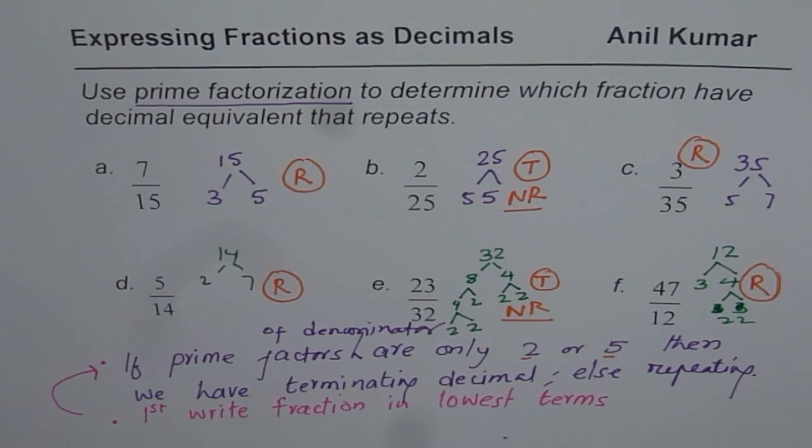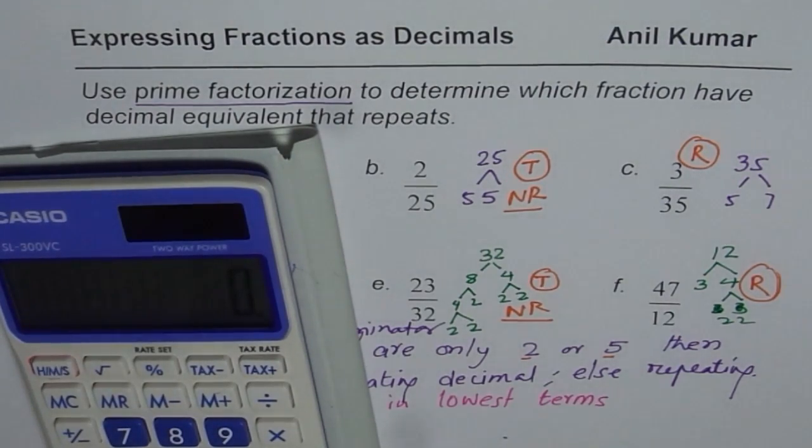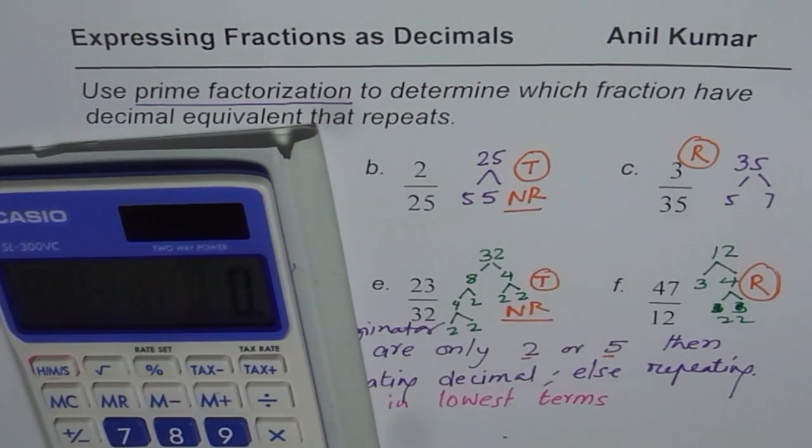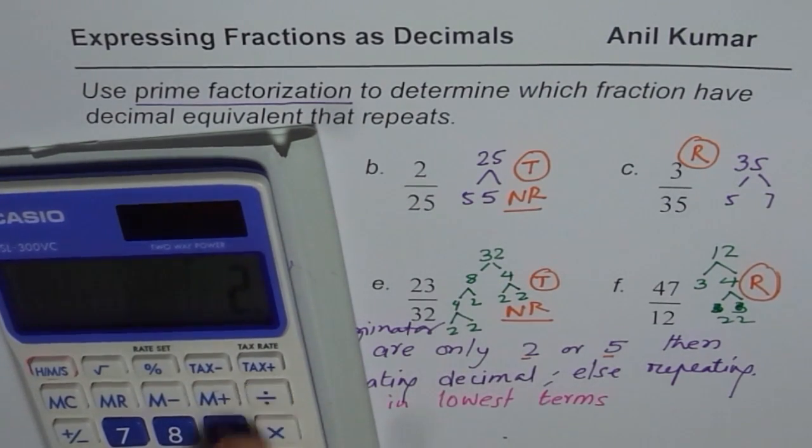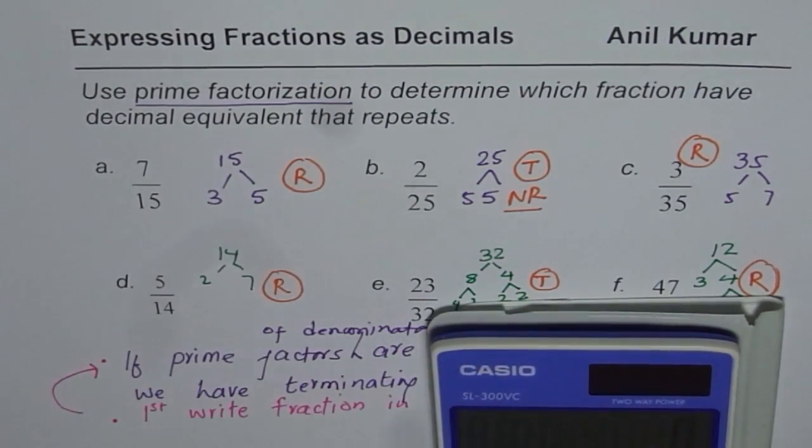So that is how you can easily check whether the given decimal is repeating or not repeating. Let us check two of them with the help of calculator. Let's check one of these terminating ones, 2 over 25. If I divide 2 by 25 I get 0.08, it is not repeating.